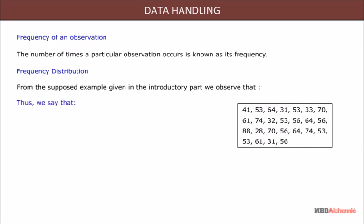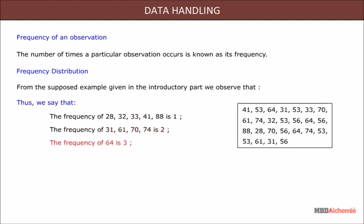Thus, the frequency of 28, 32, 33, 41, and 88 is 1. The frequency of 31, 61, 70, and 74 is 2. The frequency of 64 is 3. The frequency of 56 is 4. And the frequency of 53 is 5.